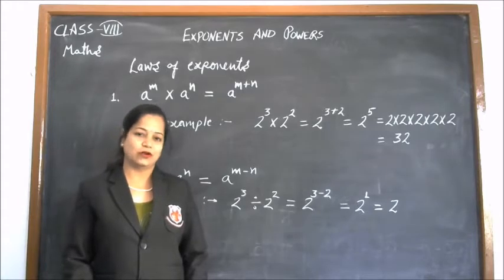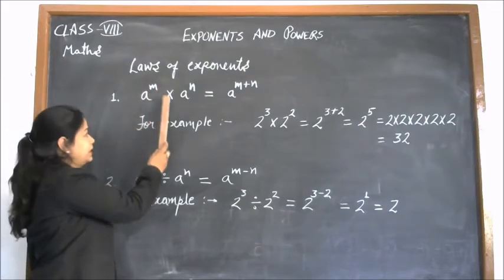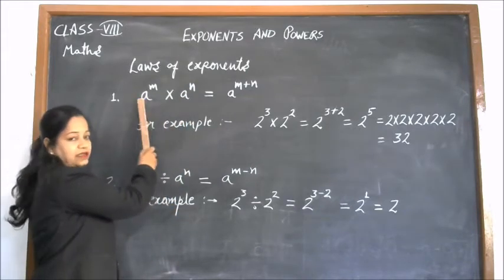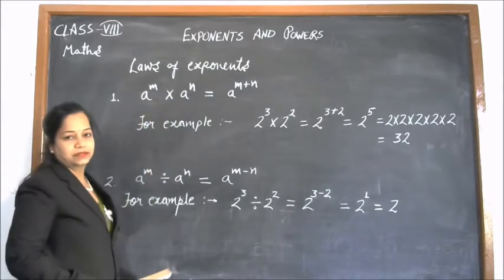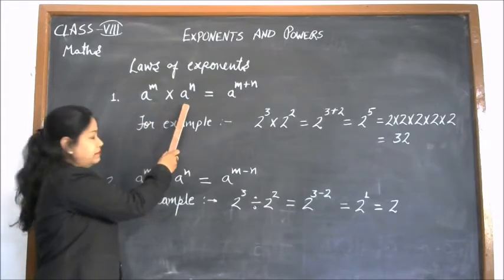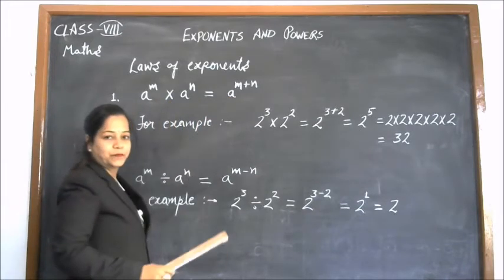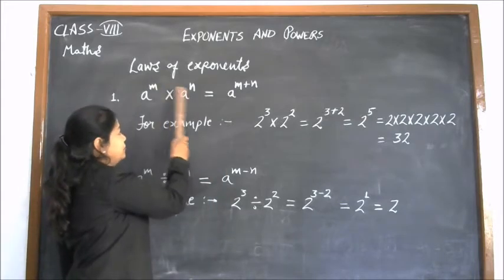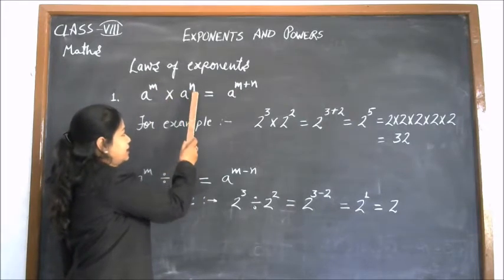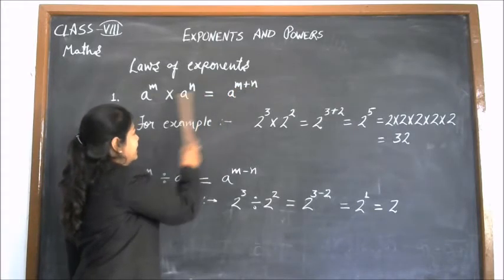Let us understand these laws. The first law is: a to the power m multiplied by a to the power n. We have the same base here and we have to multiply two numbers. Listen carefully — if the base is the same and we have to multiply, then write the same base only one time and the exponents will be added. So, a to the power m into a to the power n equals a to the power m plus n.